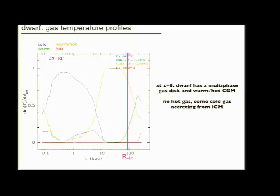The temperature profiles show that there's a multi-phase galactic disk dominated by cold gas, and there's a very sharp turnover to the million degree or 100,000 degree gas in the halo. There's no million degree gas, that's the red line here, and we see the signature of some accretion of cold gas from the intergalactic medium.